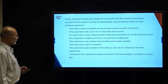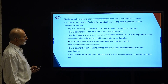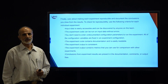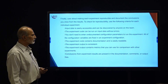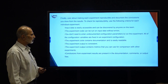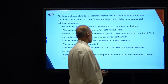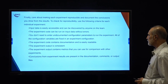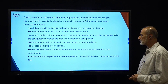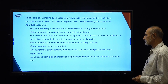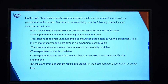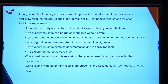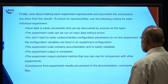Care about making each experiment reproducible and document the conclusions. The basic idea is your experiment should be reproducible — it should give the same output or result every time the experiment is run. To check reproducibility, use the following criteria: input data is easily accessible and can be discovered by anyone on the team, and experiment code can be run on input data without error.